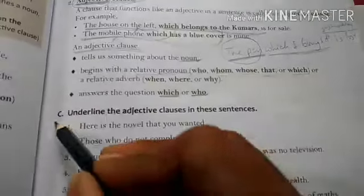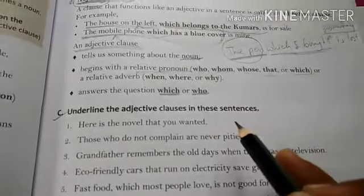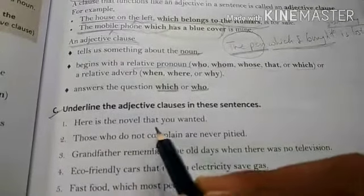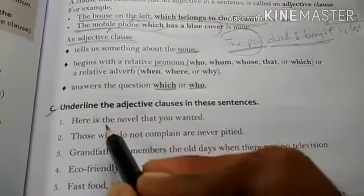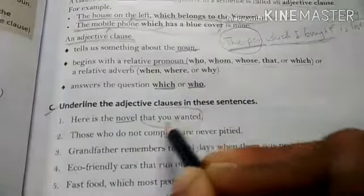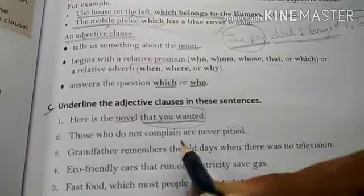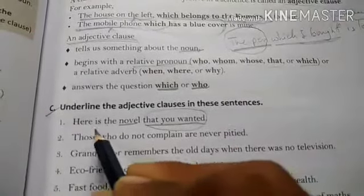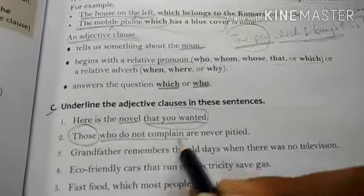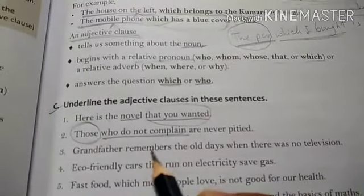Exercise C: Underline the adjective clauses in these sentences. 'Here is the novel that you wanted' — the main subject is 'novel,' and 'that you wanted' tells us about the novel, so it is the adjective clause. 'Those who do not complain are never pitied' — the sentence is about those people, and 'who do not complain' is the adjective clause. Complete this exercise in the same way.